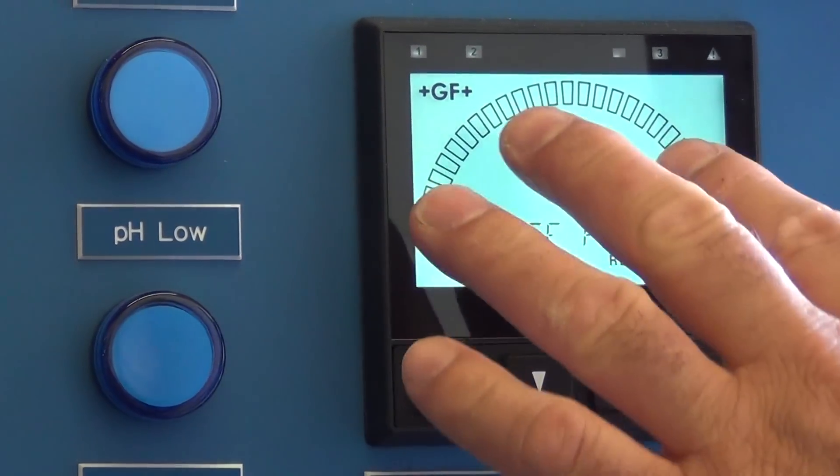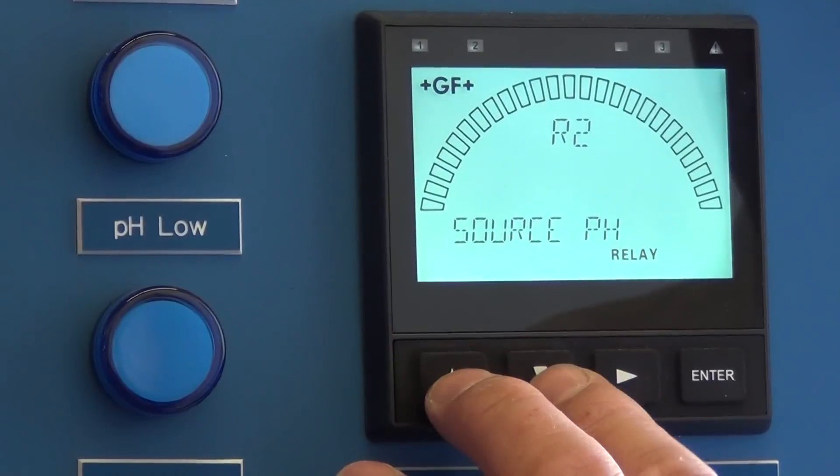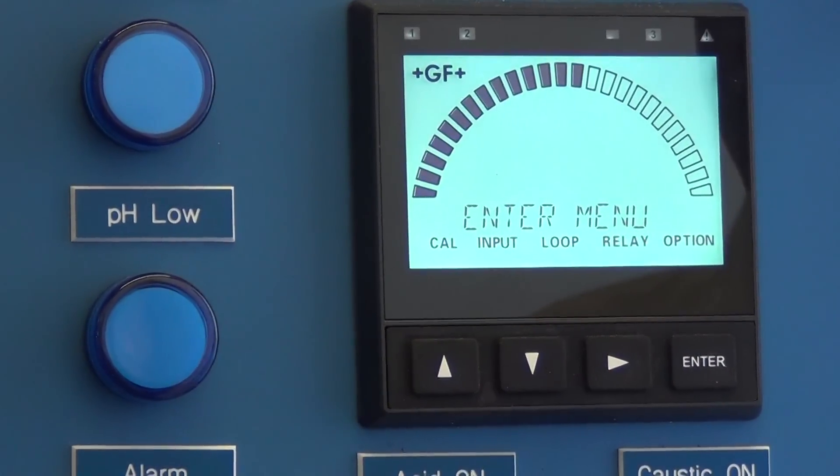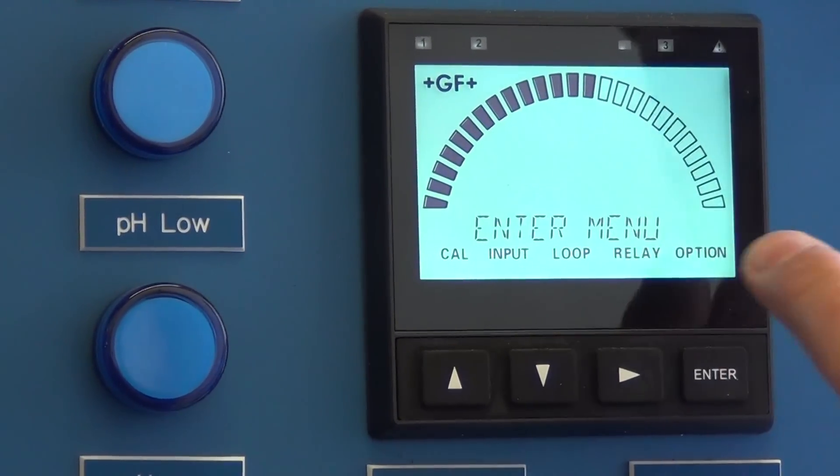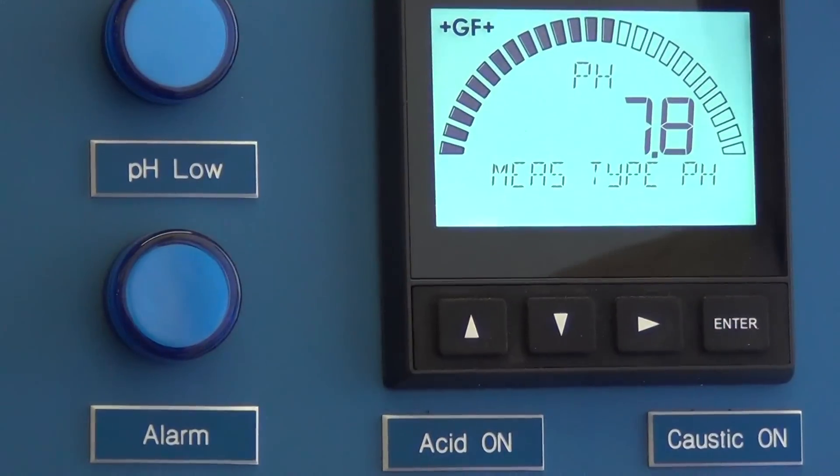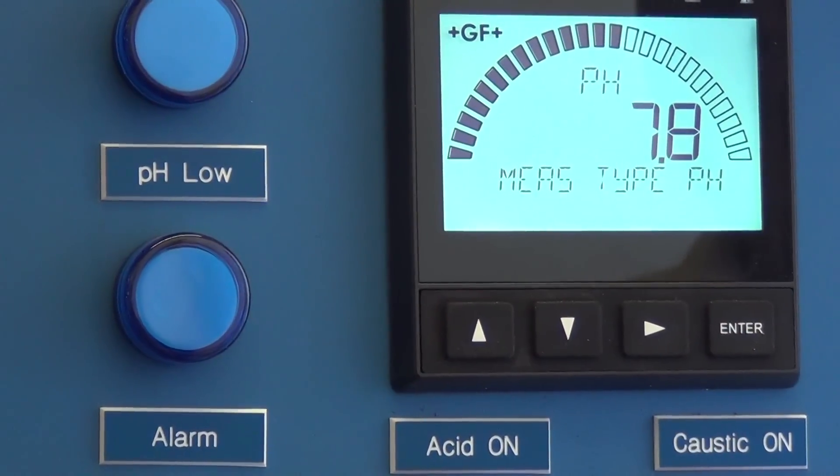Once I'm finished with all the settings in there, press the up and down arrows together at the same time. That backs us up one level in the menu. Up and down again gets us to the main screen.